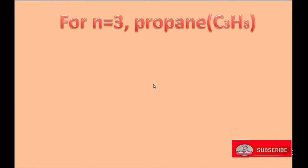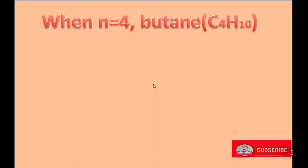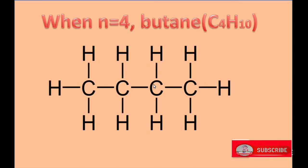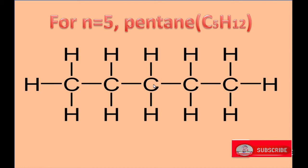For N equals 3, the alkane is propane. In propane, 3 carbon atoms are bonded by single covalent bond with 6 hydrogen atoms. When N equals 4, the alkane is butane having molecular formula C4H10, where 4 carbon atoms are bonded with each other with 10 hydrogen atoms. When N equals 5, the alkane is pentane having general formula C5H12, where 5 carbon atoms are bonded with each other with 12 hydrogen atoms by single covalent bond.